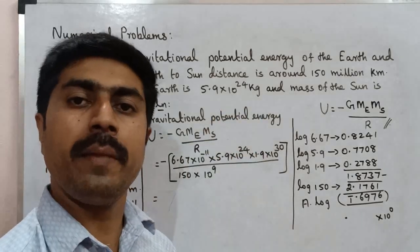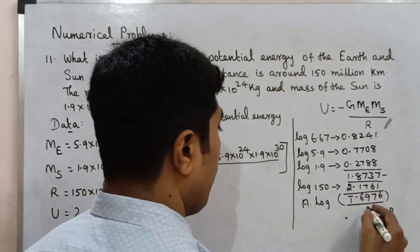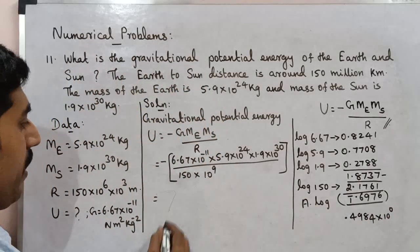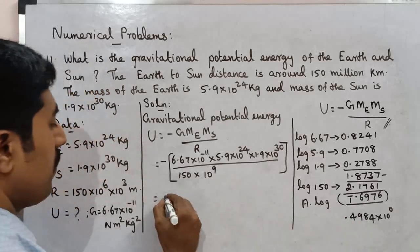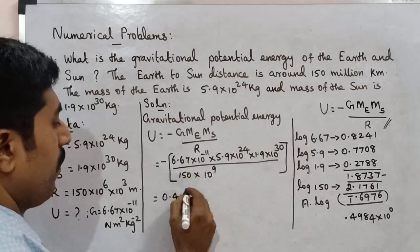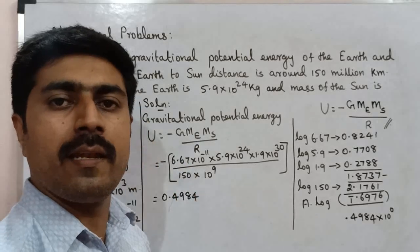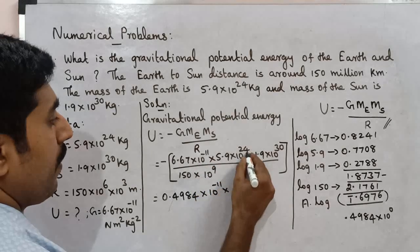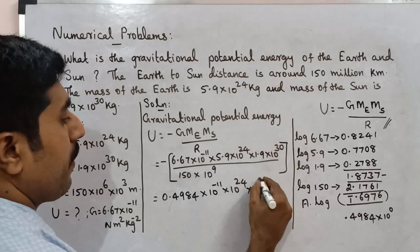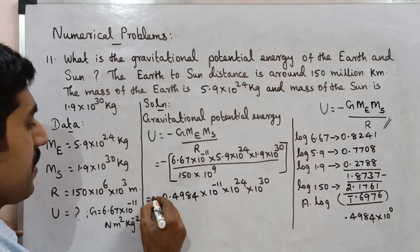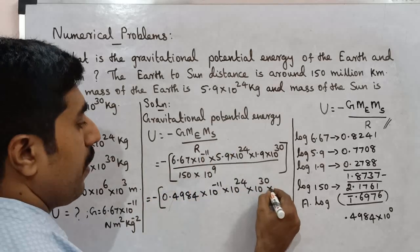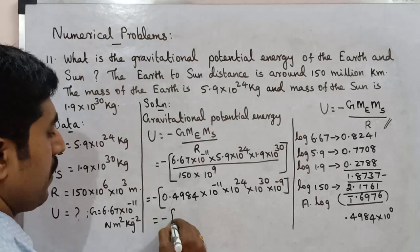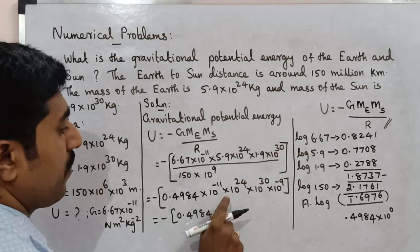We add the mean difference to get 4984. So the result is 0.4984 into 10 power 0. Any number to the power 0 equals 1. Now combining powers: 10 power minus 11, 10 power 24, 10 power 30 in the numerator, minus 10 power 9 in the denominator — which gives 0.4984 into 10 power minus 9.